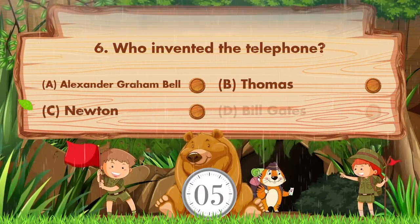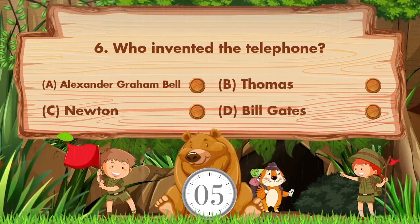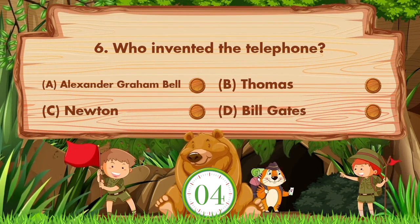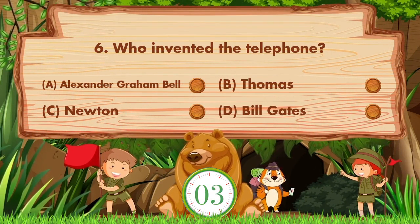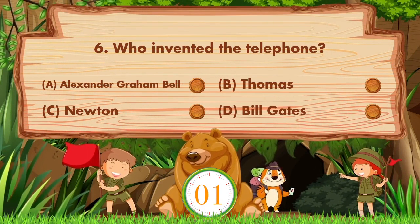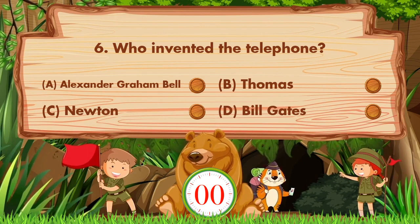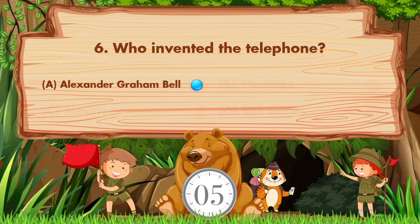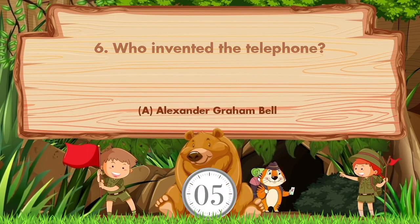Who invented the telephone? Option A is Alexander Graham Bell, B is Thomas, C is Newton, D is Bill Gates. The answer is option A, Alexander Graham Bell.